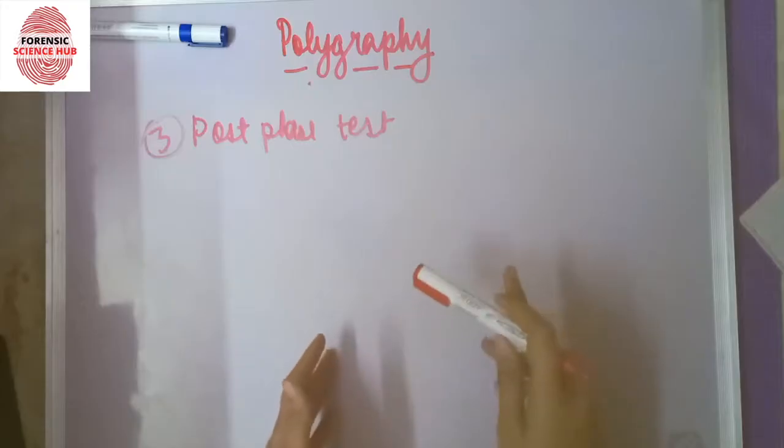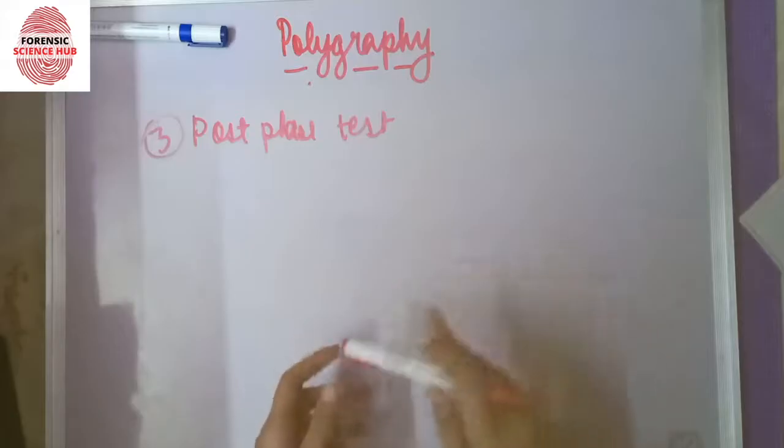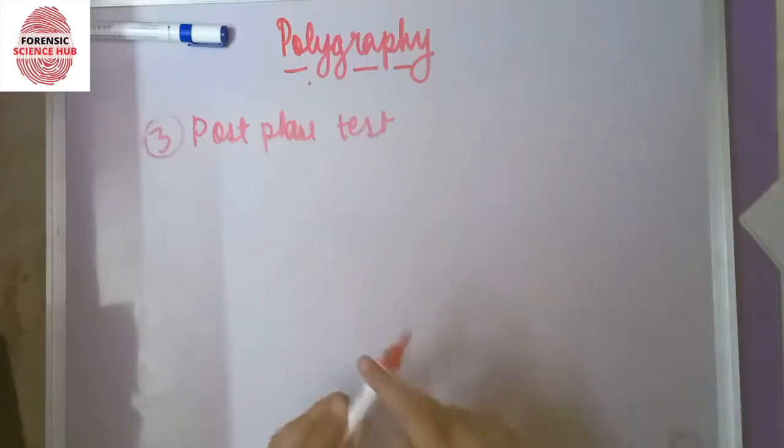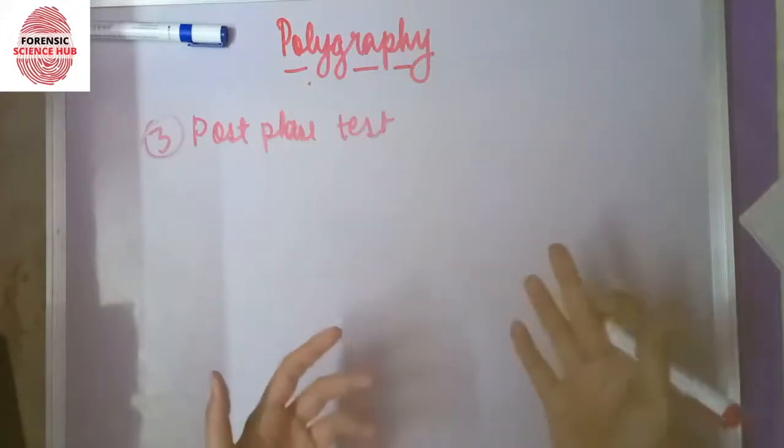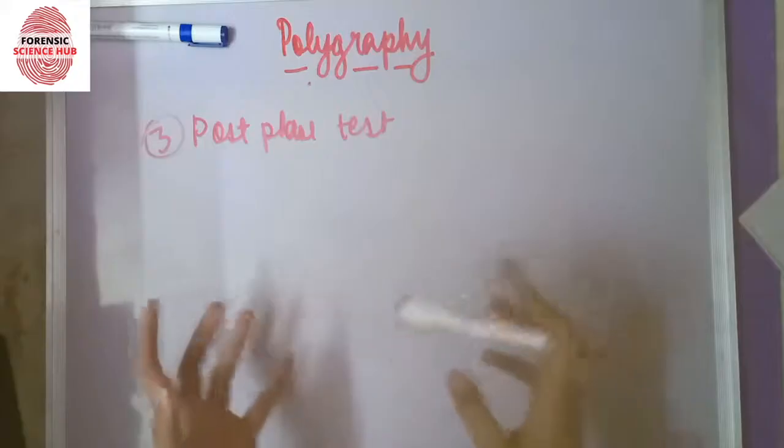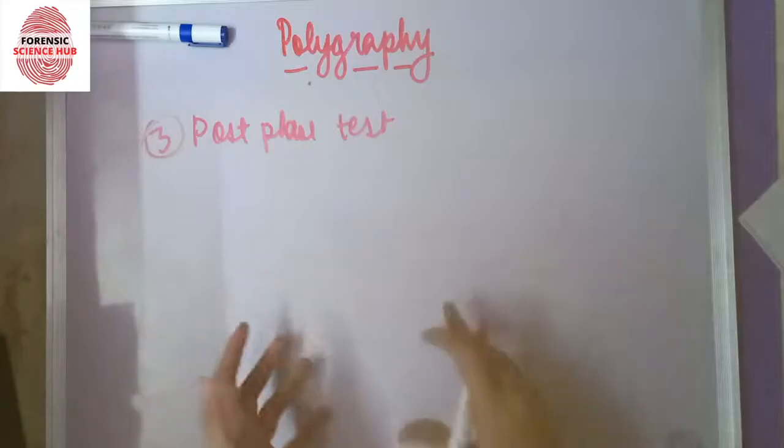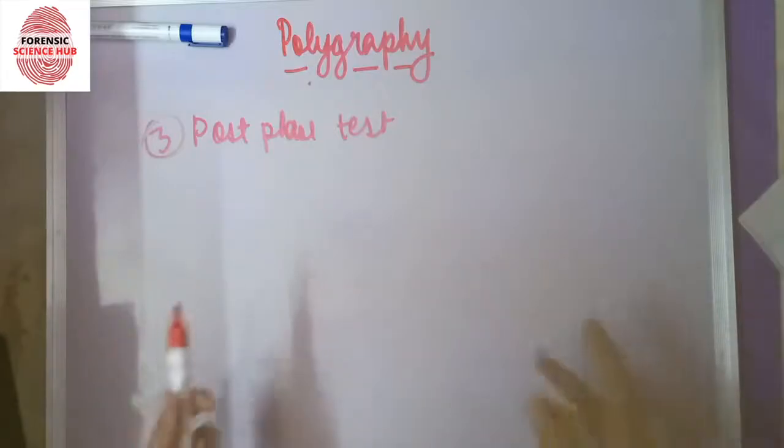Polygraph results are not admissible in court and do not count as evidence. However, police and investigative officers can use them to get an idea whether a person is a suspect or not.